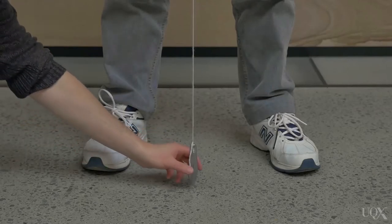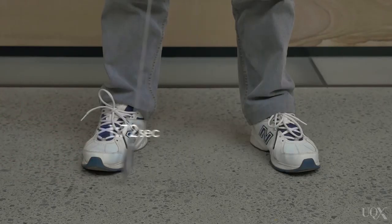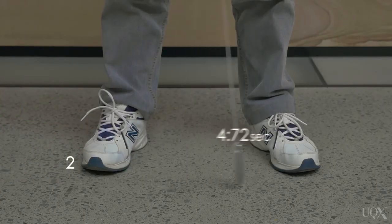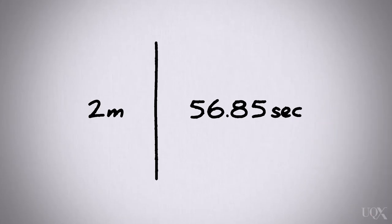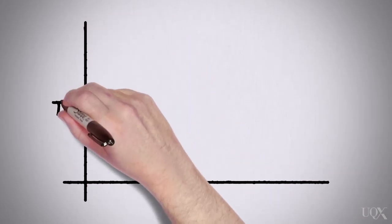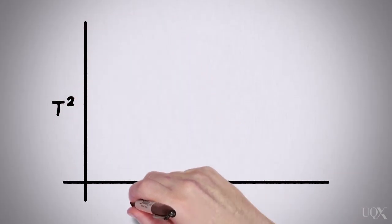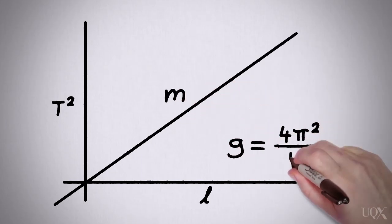Pull the pendulum aside by about 20 centimetres, release it, and measure the time taken for 20 oscillations. You can choose more if you like — the larger the number, the smaller the margin of error will be. Record your results. Then shorten the pendulum by 10 centimetres and repeat the process. Using a graphing tool, plot time squared versus length. The gradient m will allow you to determine the value of g.